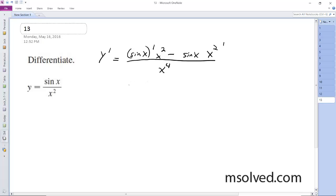This becomes cosine of x times x squared minus 2x sine of x, over x to the fourth. I can factor out an x on top,